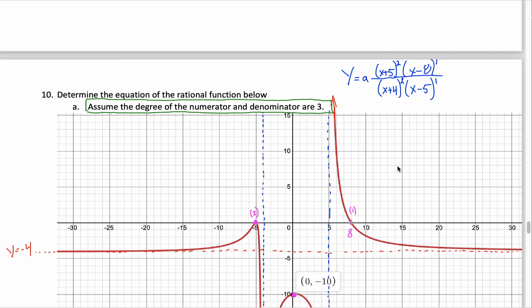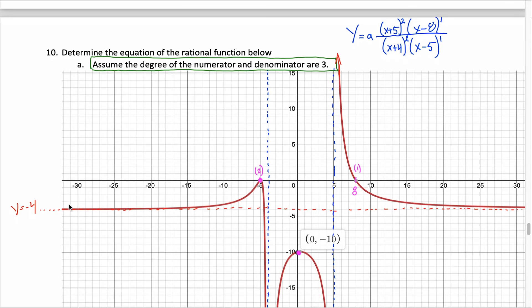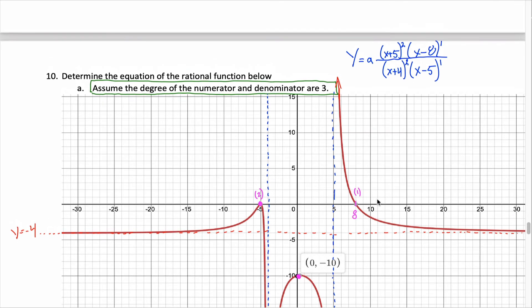I'm going to use any other point on the graph, or if I prefer, I'm going to use the end behavior. Let's first solve by using any other point on the graph. Note that this graph goes through the point 0, negative 10. What that means is that when x equals 0, y must be equal to negative 10.